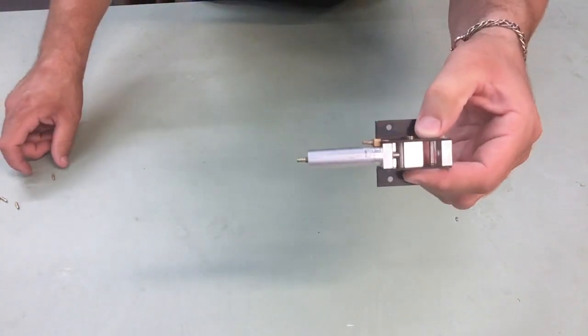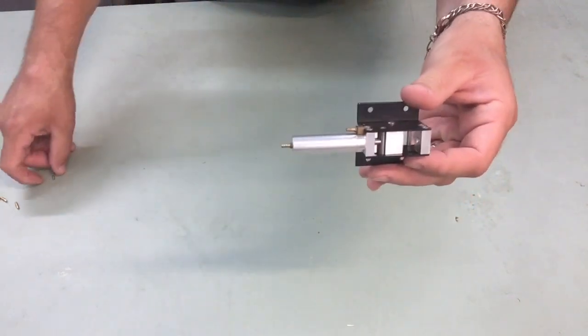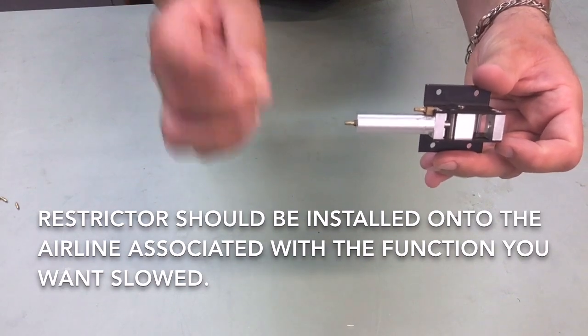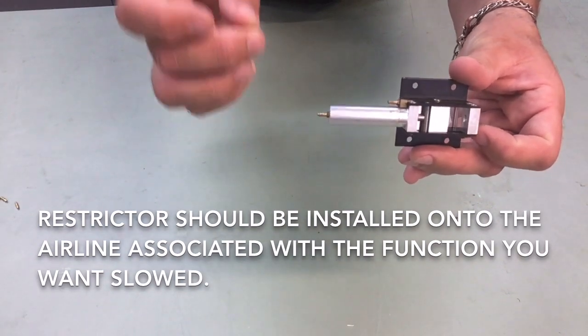When you have your retract here, you want your airline restrictor to go on the side that you want slowed down.